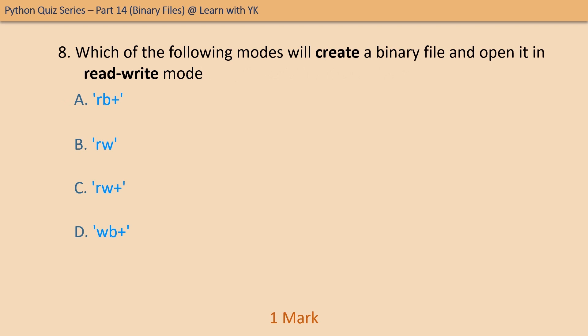Question number eight: which of the following modes will create a binary file and open it in read-write mode? We have to create a binary file. The correct option is option D — wb plus.